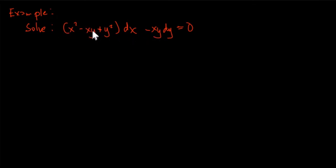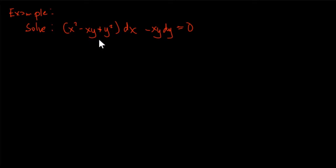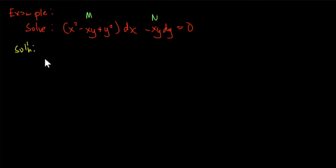We could not use variable separable because the variables could not be separated. You could not factor out x or y from the first term because some terms lack x or y respectively. So you could not use directly the method of variable separable. Our M is in terms of x and y, and our N is in terms of x and y. The first thing to do is to test if this function is homogeneous or not.